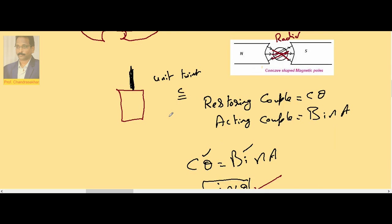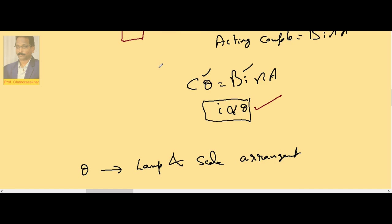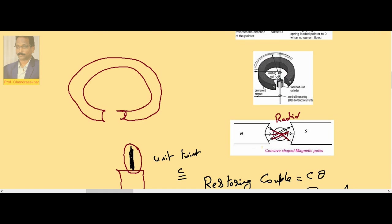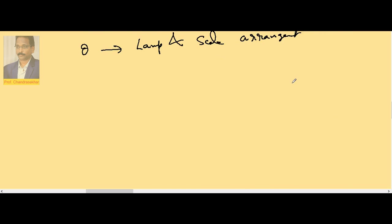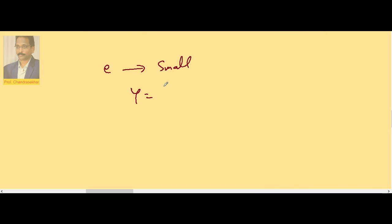The wire used to suspend the coil must have certain qualities. First, elongation must be very small. Since the coil is a suspended load, if the wire elongates, the coil moves down and away from the field. From Y = FL / A, a small elongation requires a high Young's modulus, so the material must have a very high Young's modulus.